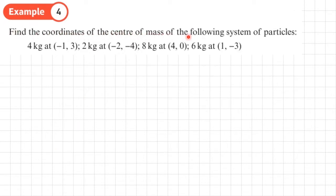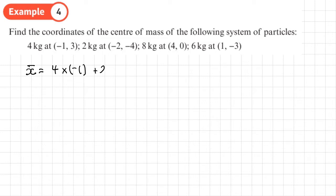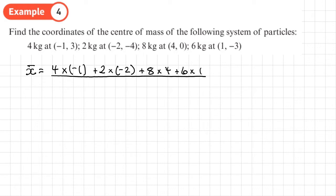Example 4: find the coordinates of the centre of mass of the following system of particles. I'm not going to draw a diagram — I'll work purely from the given data. Starting with X̄: (4×−1) + (2×−2) + (8×4) + (6×1), divided by (4 + 2 + 8 + 6). We can have negative distances from the origin. That gives 30 divided by 20, which is 1.5. So X̄ = 1.5.